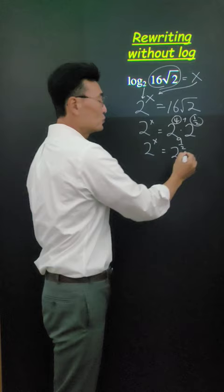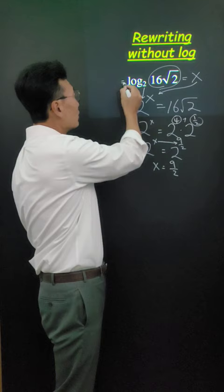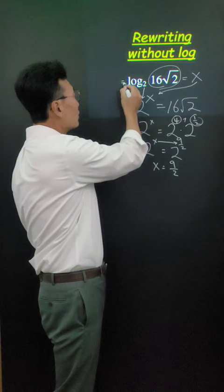Since the base is 2 on the left side and also the right side, we could set x equals to 9 over 2. Which means log base 2 of 16 root 2 is equal to 9 over 2.